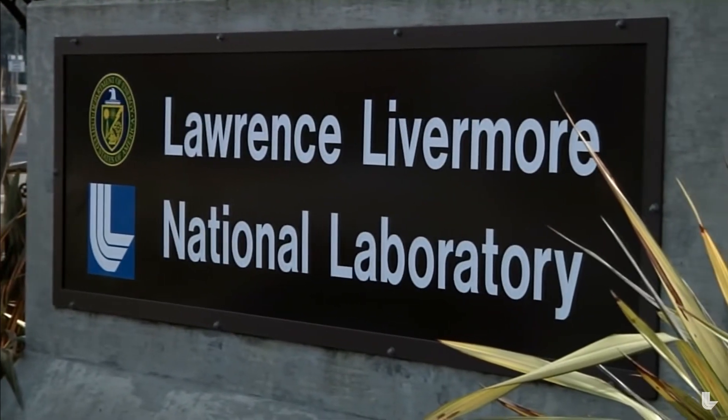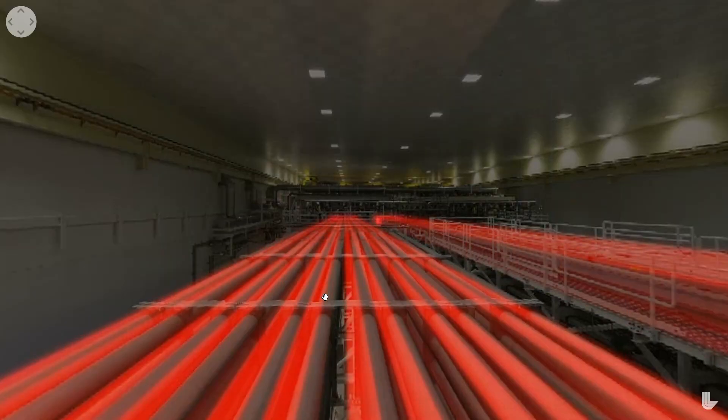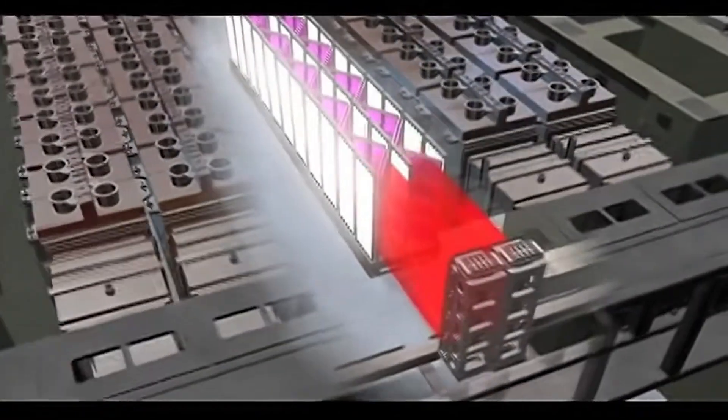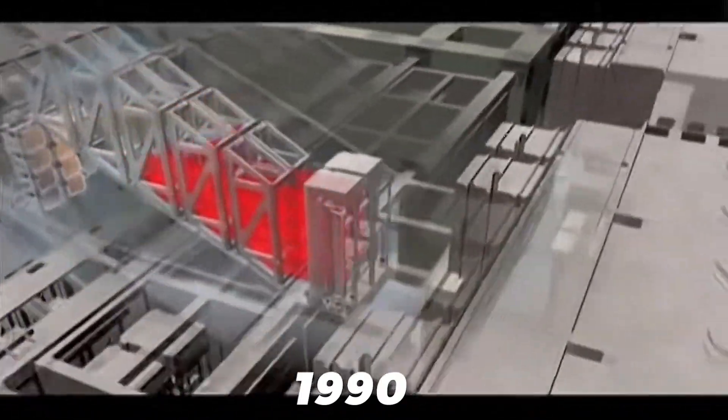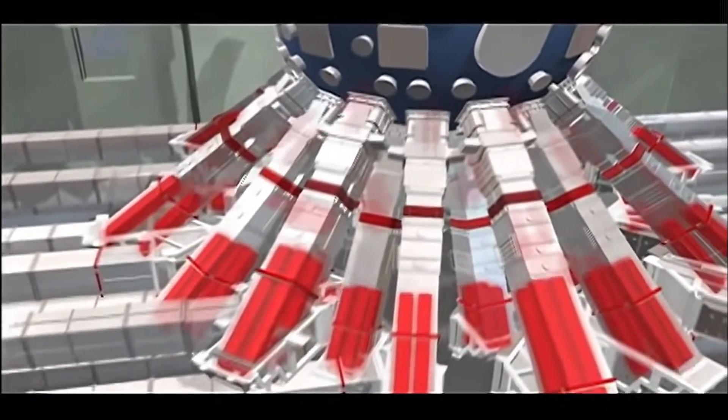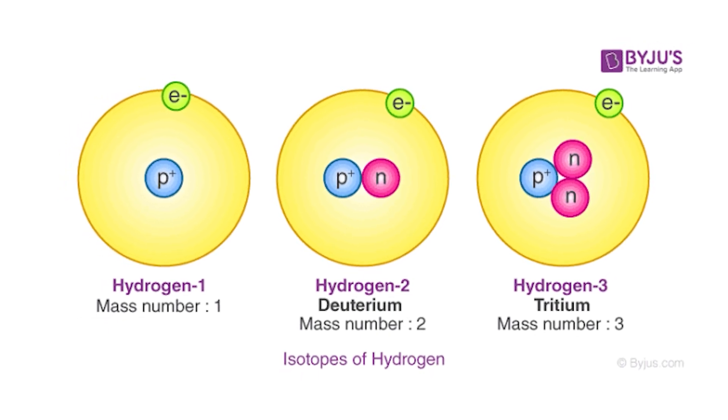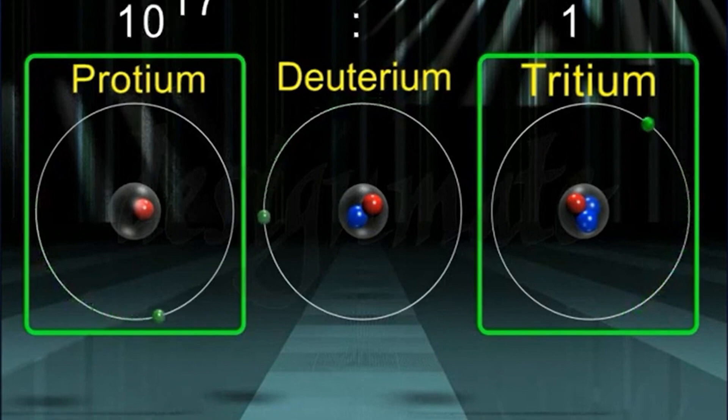LLNL is a leading institution in the pursuit of fusion energy through ICF. Researchers work at the National Ignition Facility, NIF, which is the world's largest laser facility designed to study nuclear fusion. The NIF is the world's most powerful and advanced laser system built to study high-energy physics, nuclear fusion, and astrophysics. The goal of NIF is to create conditions where hydrogen isotopes, such as deuterium and tritium, can be heated and compressed to initiate a self-sustaining fusion reaction, releasing a tremendous amount of energy.